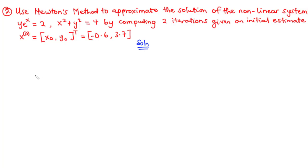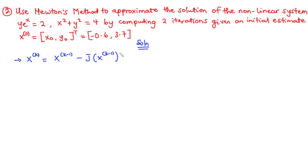To solve this problem, the first thing we need to do is write down the formula for finding the solution of the non-linear system using Newton-Raphson's method. We have x of k equal to x of k minus 1, minus the inverse Jacobian of x of k minus 1, times f of x of k minus 1.